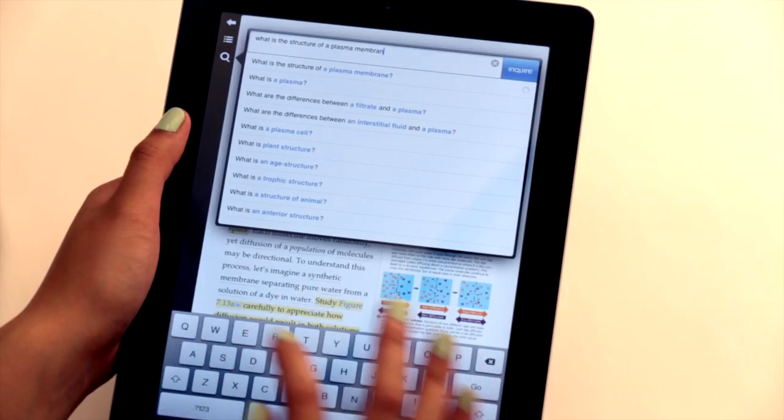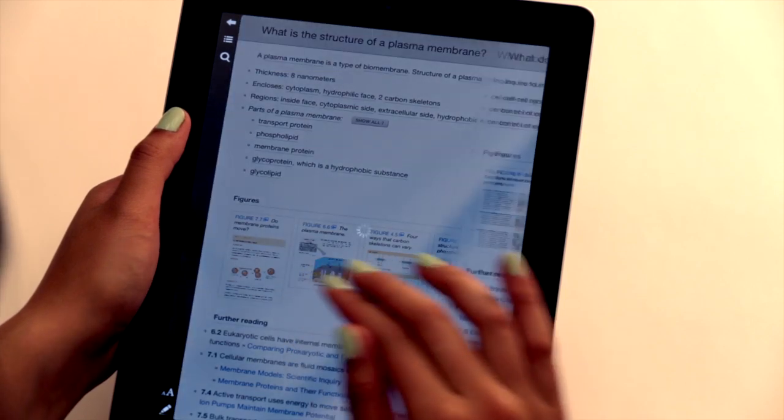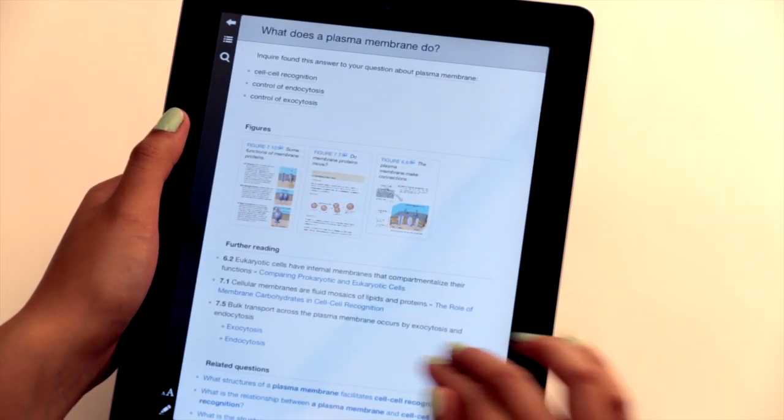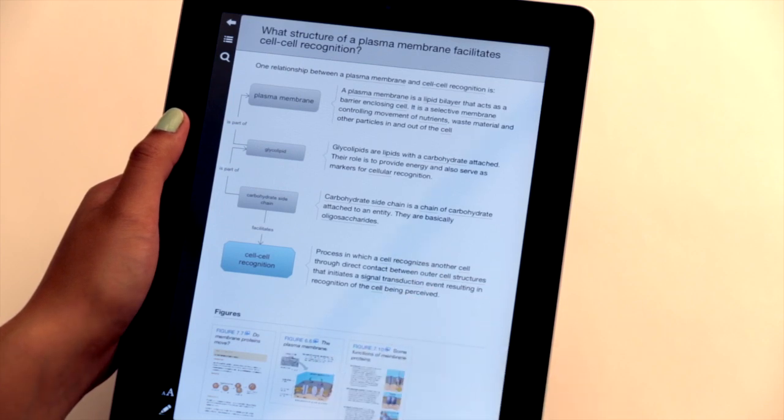I've been reading about plasma membranes, so I might ask questions about their structure, their function, and about the relationship between structure and function. Understanding relationships is crucial to understanding biology, and I can't get answers like these from the book.